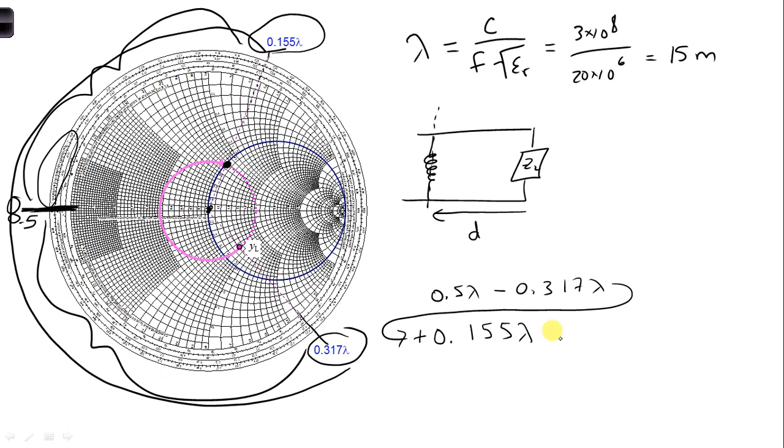And calculate all that together, we get 0.338 lambda. And then once you plug in our value for lambda, we get D is equal to 5.07 meters.